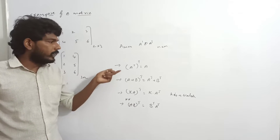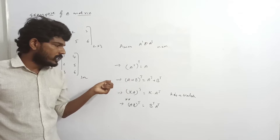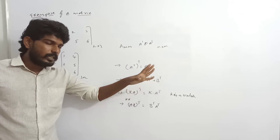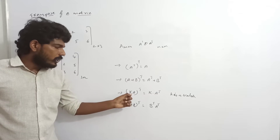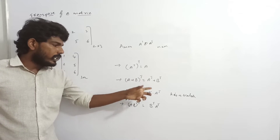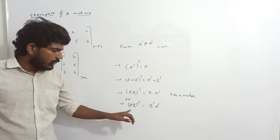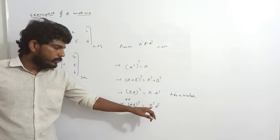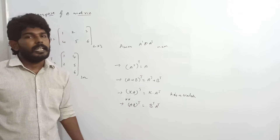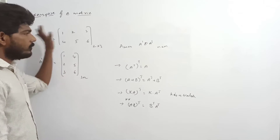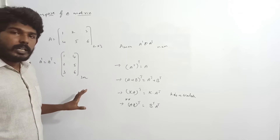So the properties are: A transpose whole transpose is A. A plus B whole transpose equals A transpose plus B transpose. k into A whole transpose equals k into A transpose. AB whole transpose equals B transpose A transpose. Simple concept.